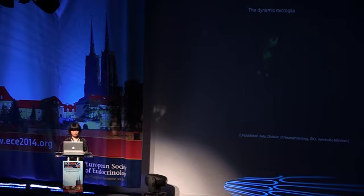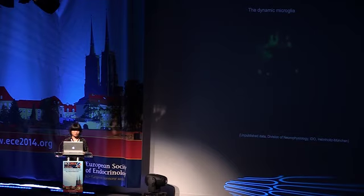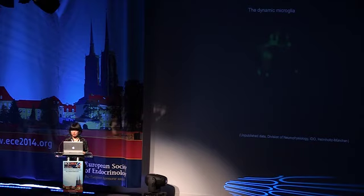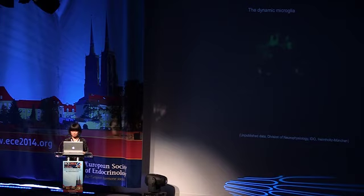Microglia are very dynamic. If you look at this movement, it reflects their physiology — the processes are moving around all the time. These are GFP-enabled microglia in mouse brain from ex vivo cultured brain slices. When we give LPS you can see how active the processes become, surveying the entire microenvironment. Each microglia has its own territory, just like astrocytes.